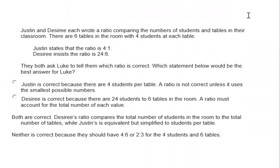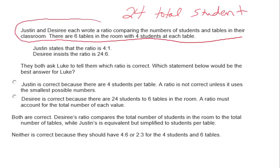A ratio can also give you other information that isn't directly stated. For example, Justin and Desiree each wrote a ratio comparing the number of students and tables in their classroom. There are six tables in the room with four students at each table. We can determine there are 24 total students: six tables times four students equals 24.